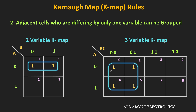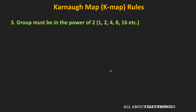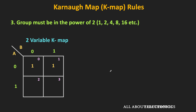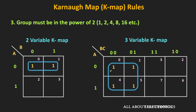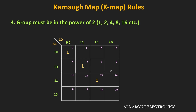These groups should be in the power of 2 — that means the size of the group can be 1, 2, 4, 8, or 16. As you can see, in this two-variable K map this is an example of a group of 2, while in this three-variable K map, four minterms are combined using grouping. If it is not possible to make a group of 2, 4, or 8, then we can also consider each minterm individually.